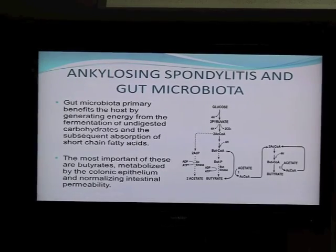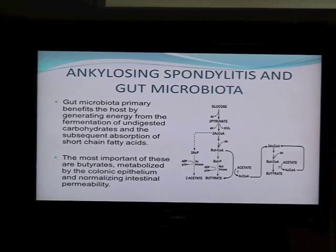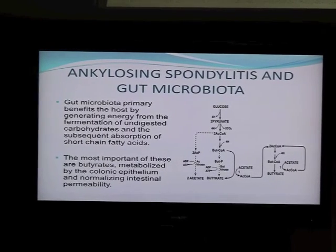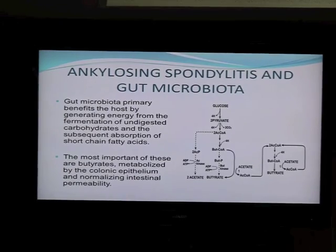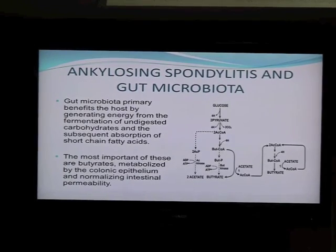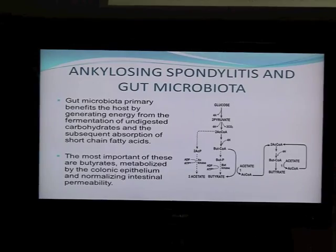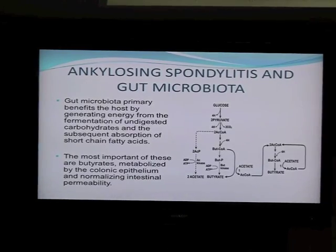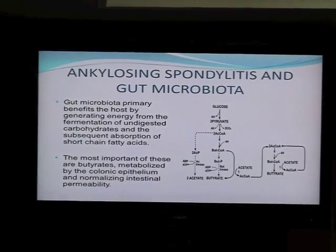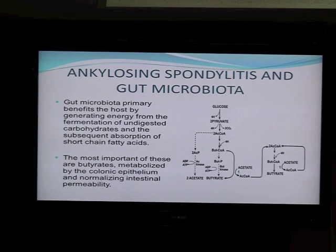If you have normal gut microflora, your microorganisms produce butyrate, and butyrate shuts down the zonulin pathway and stops the leakage. There is a very well-defined balance between butyrate and zonulin. If the balance is disturbed, you develop leaky gut syndrome, and as a consequence you may end up with various pathological consequences.